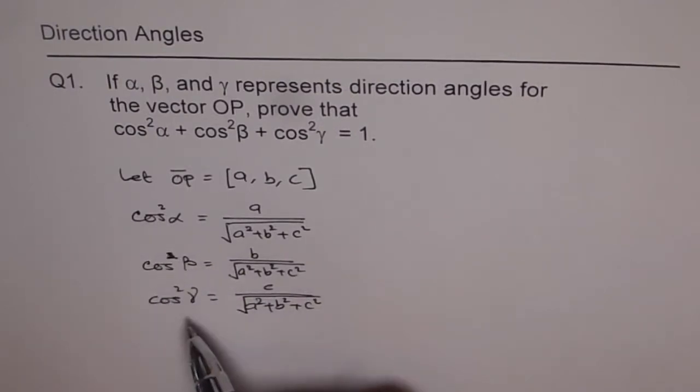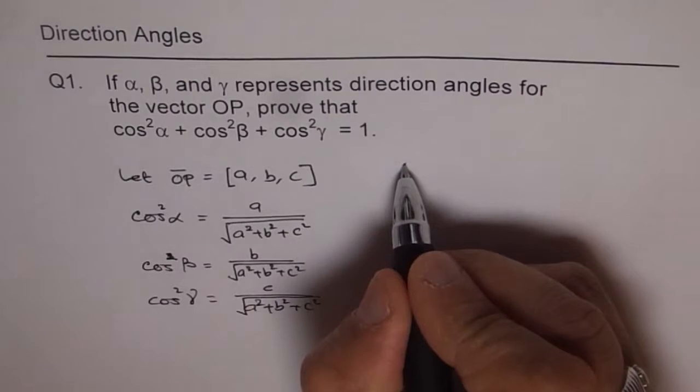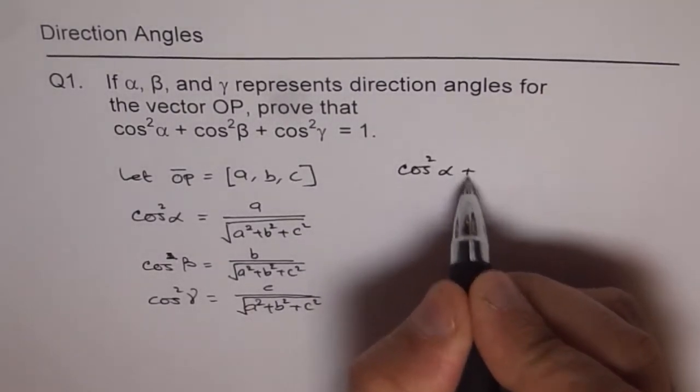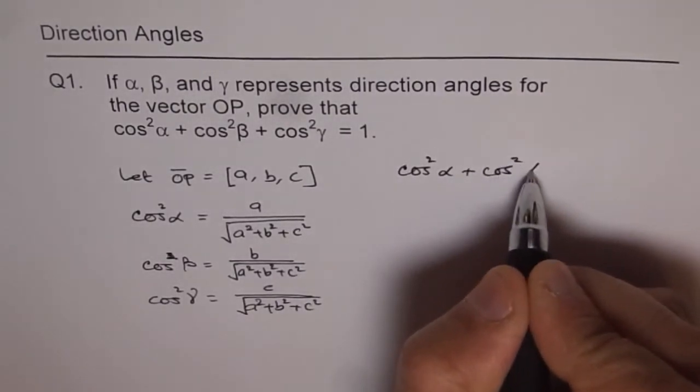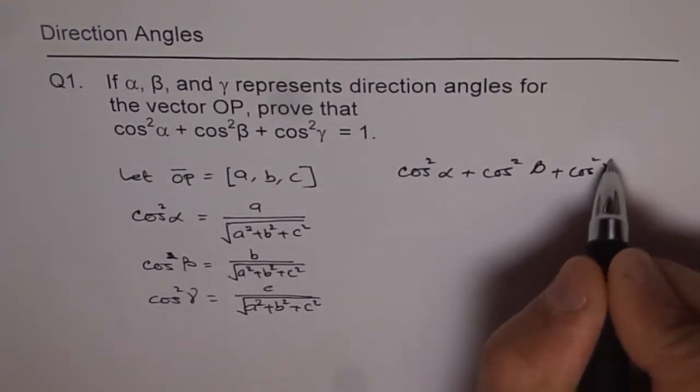Now if I add all three of them, what do I get? That's what we need to see. So what is cos square alpha plus cos square beta plus cos square gamma equals to?